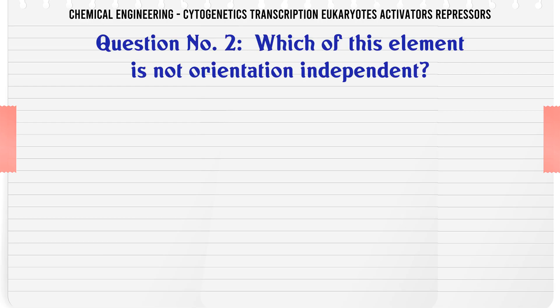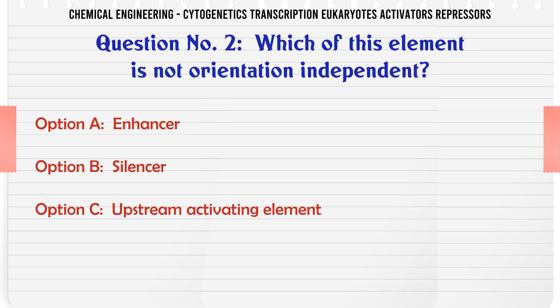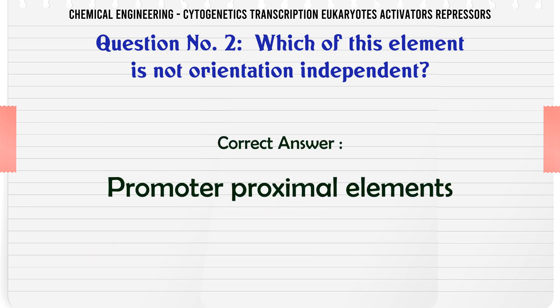Which of these elements is not orientation independent? A. Enhancer. B. Silencer. C. Upstream activating element. D. Promoter proximal elements. The correct answer is Promoter proximal elements.